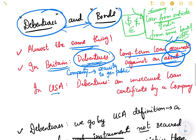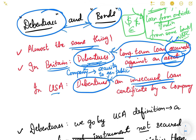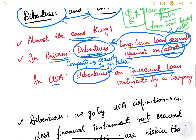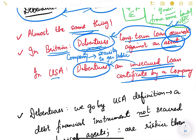In the USA, however, debentures are loans that are unsecured. It is simply a difference in terminology. In the USA, unsecured loans are called debentures, while in Britain, secured loans are called debentures. Both are loans, just opposite definitions of the same word.